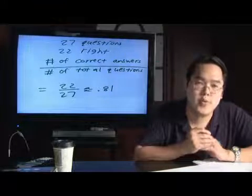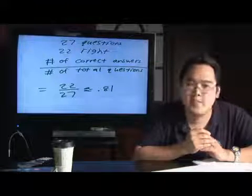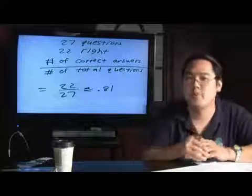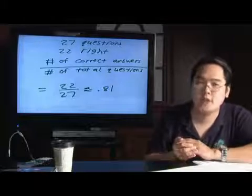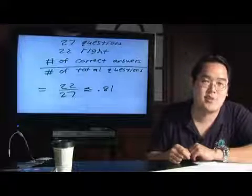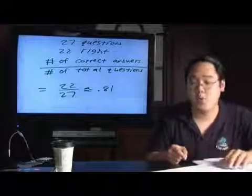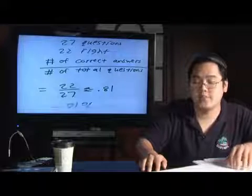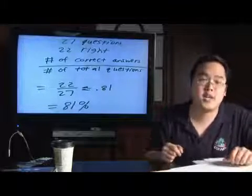Now, those two decimal places gives you exactly the percentage score that you need because the only thing to do after that is to convert the decimal, shift it to the right two places, and you're going to get the percentage answer. As you can see, .81 after shifting the decimal is 81 percent.